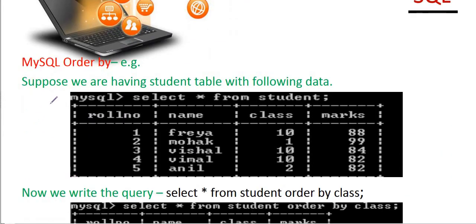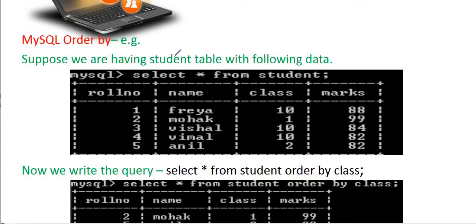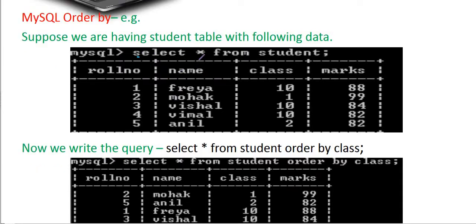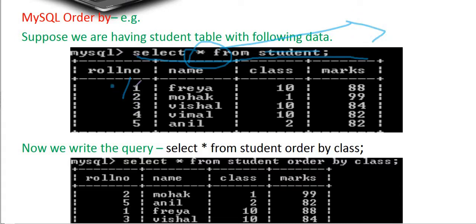Now, let's look at some screenshots. Suppose we have a student table with some data. SELECT * FROM student — the star means all columns — so we retrieve the complete data from the student table.